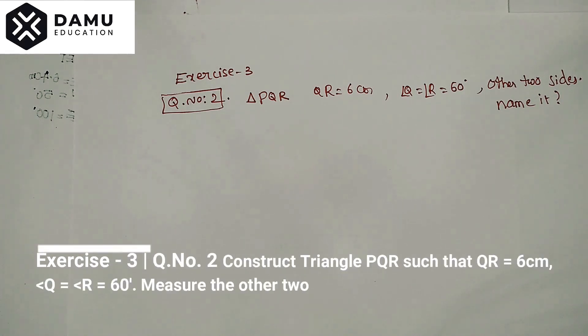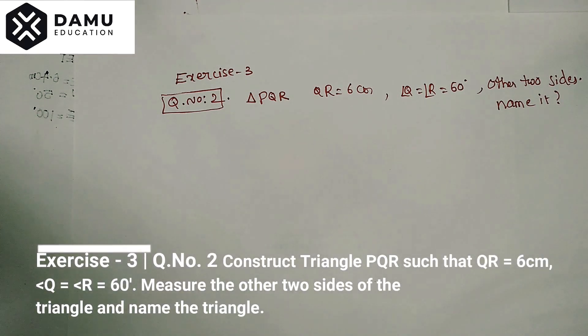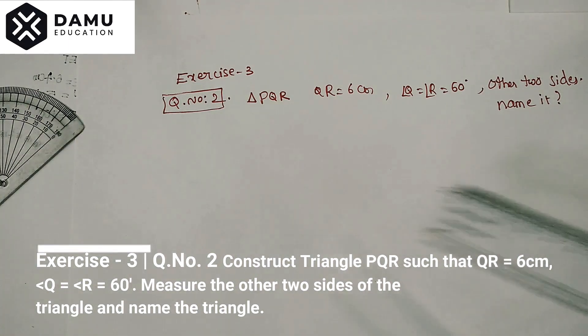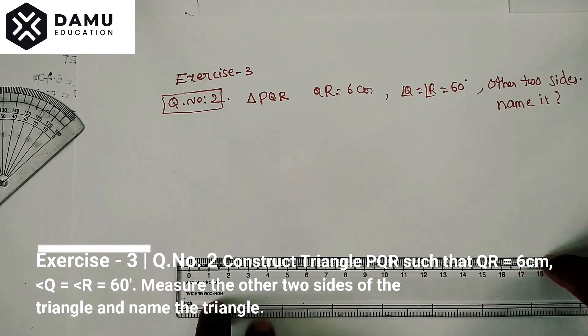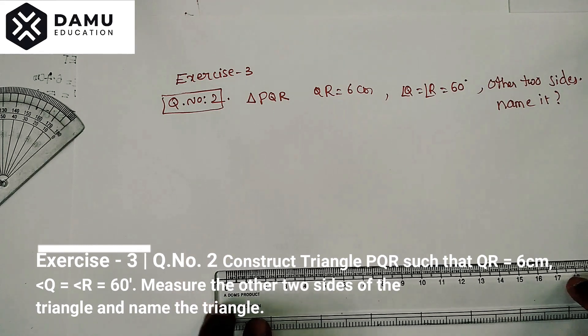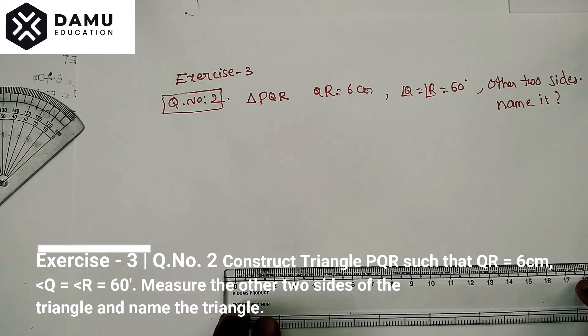In this session we're going to discuss how to construct triangle PQR with QR given as 6 centimeters. The two angles are given as 60 degrees and 60 degrees, and after measuring those two angles we have to find what are the remaining angles. So we're going to construct our triangle here.